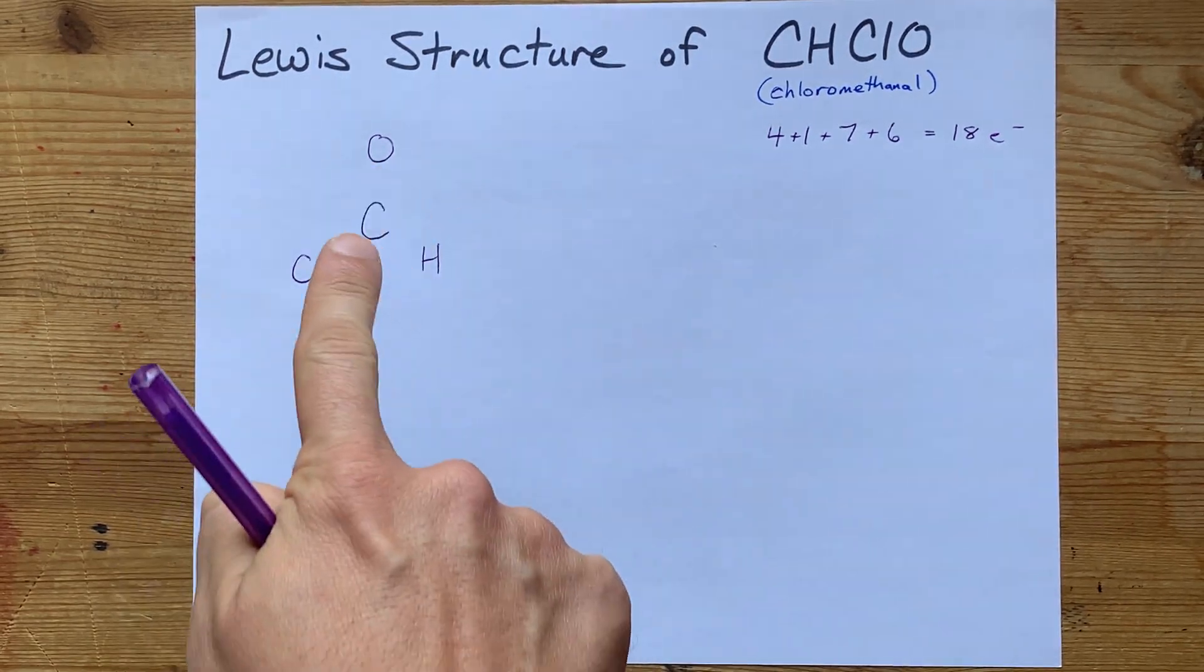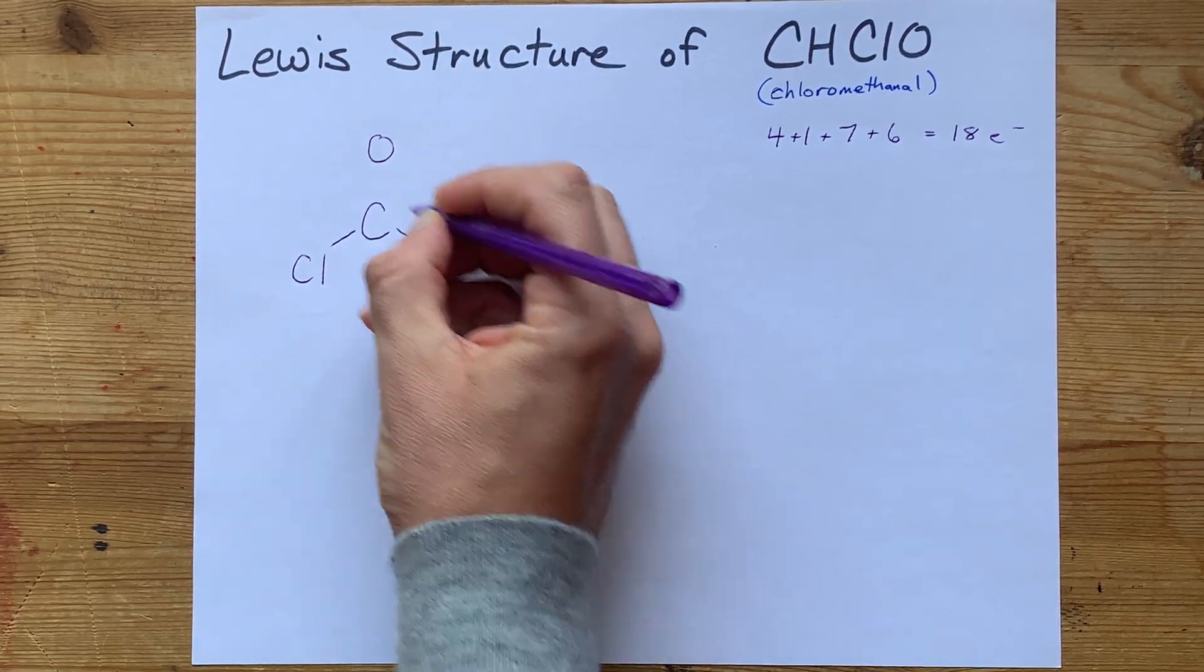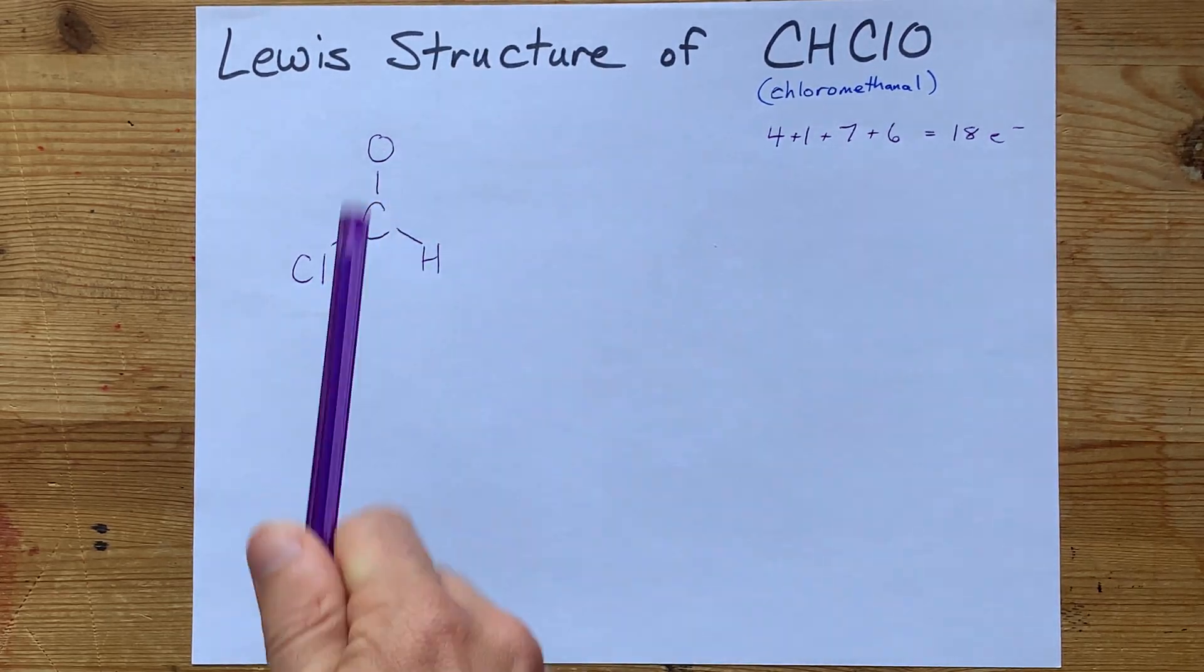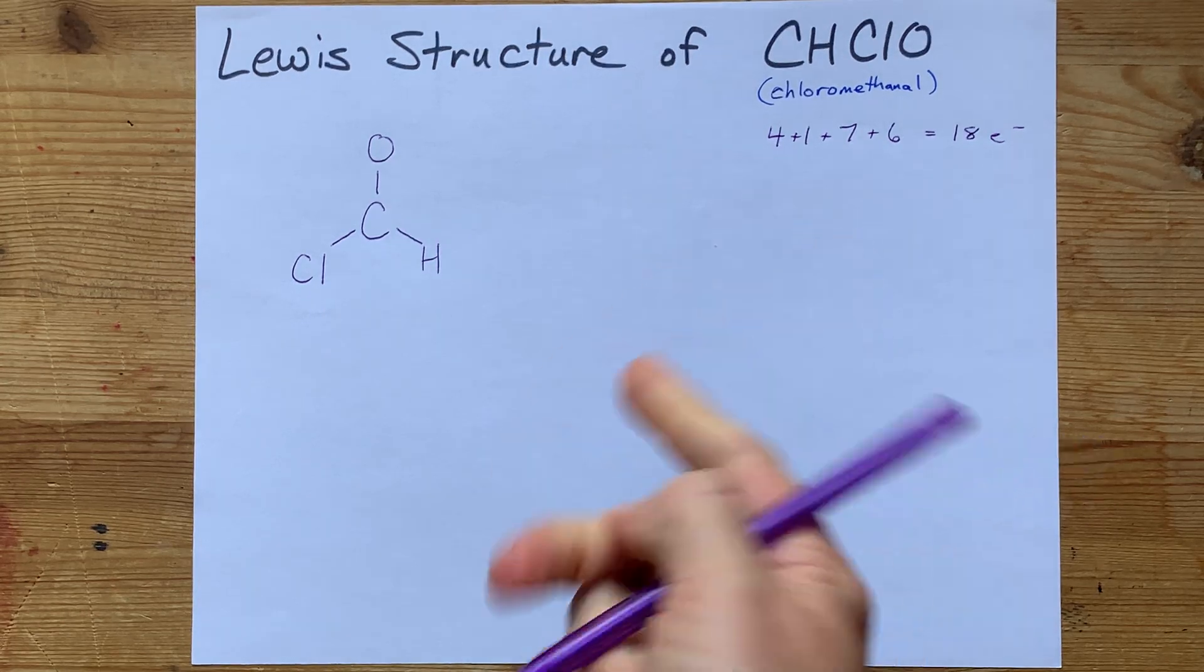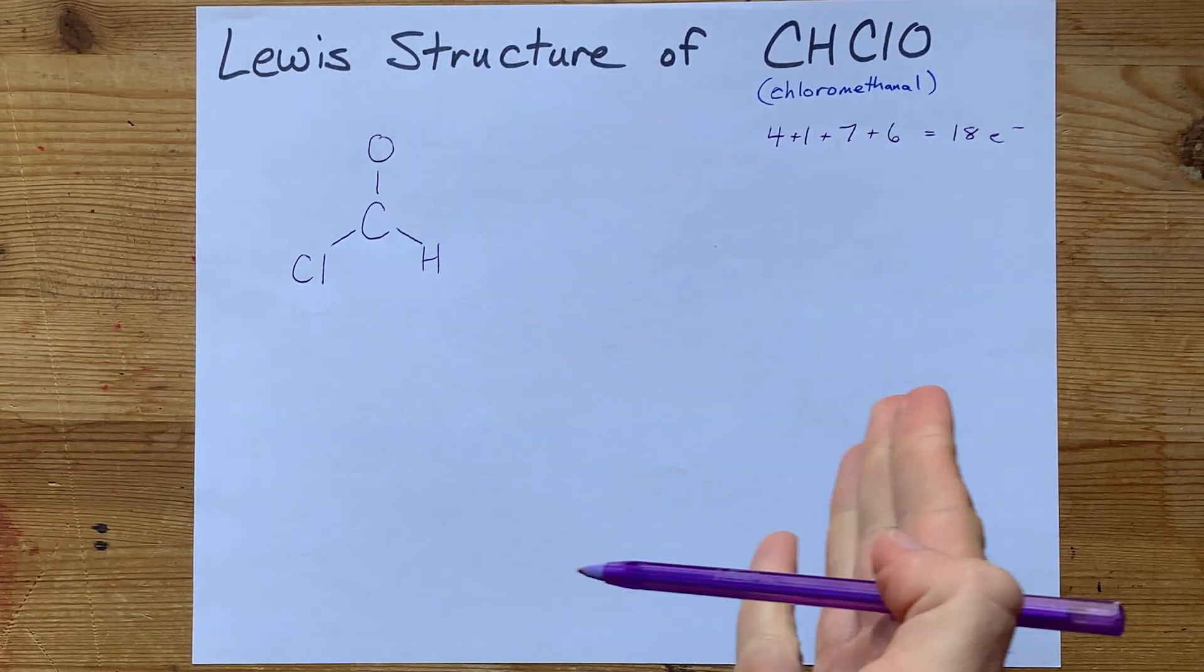Step 2, I like connecting my central atom to all of my outer atoms. Each of those is a single bond, and each single bond is worth 2 electrons. So I've put down 2, 4, 6 electrons total.